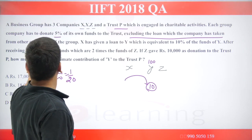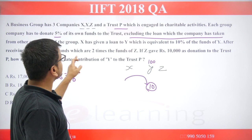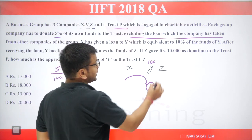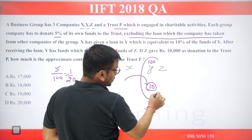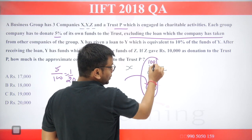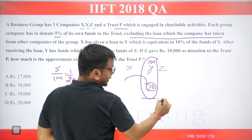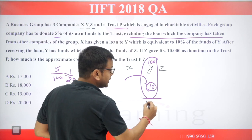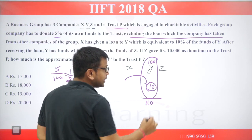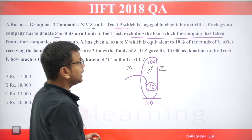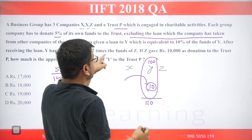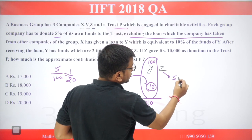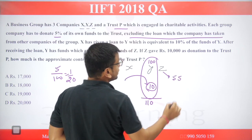After receiving the loan, Y has funds which are two times the funds of G. So if Y gets a 10 rupee loan on 100 rupees, that makes 110 rupees. This 110 rupees is two times the funds of G, which means G has 55 rupees.